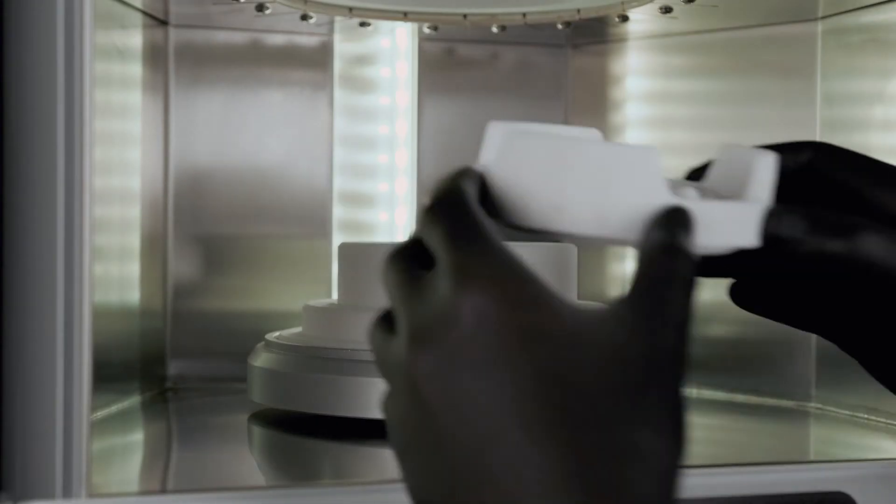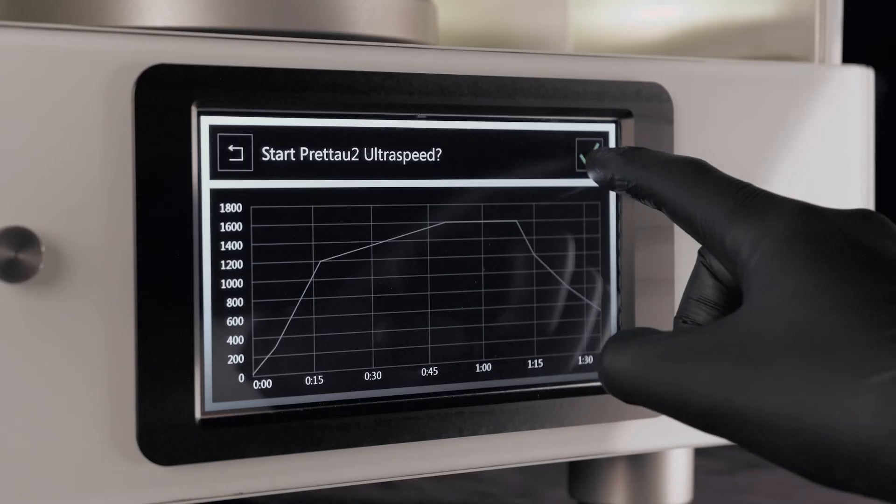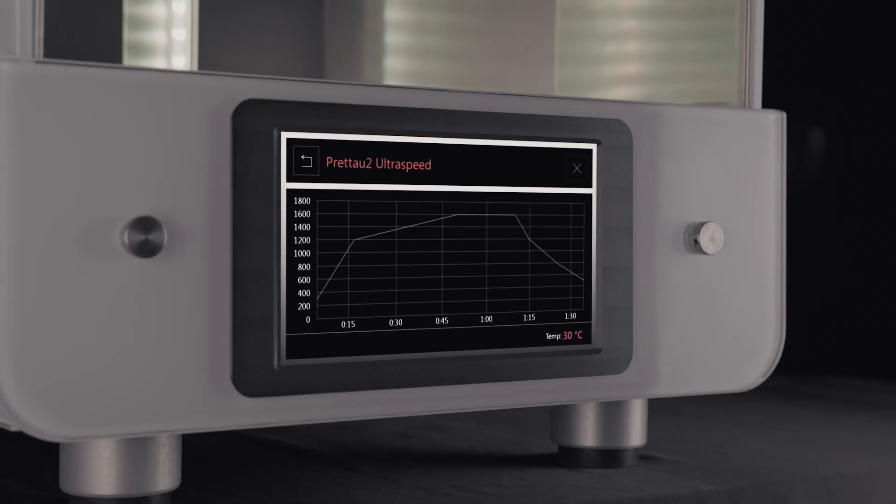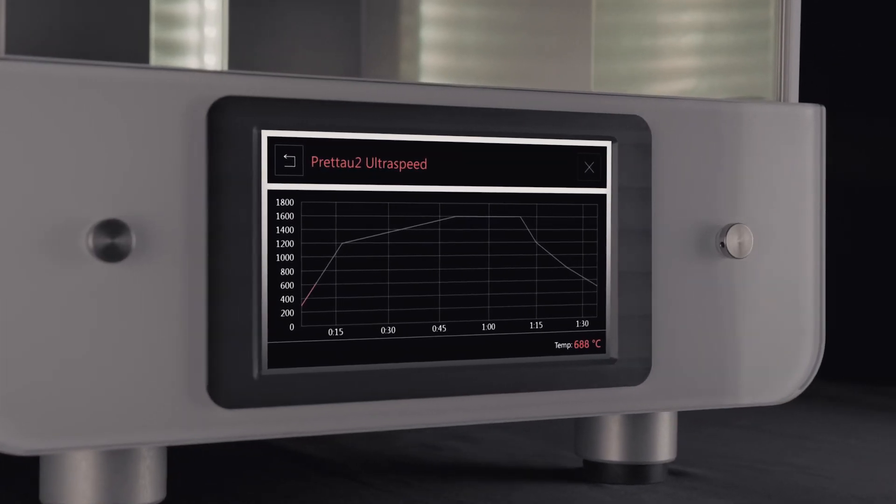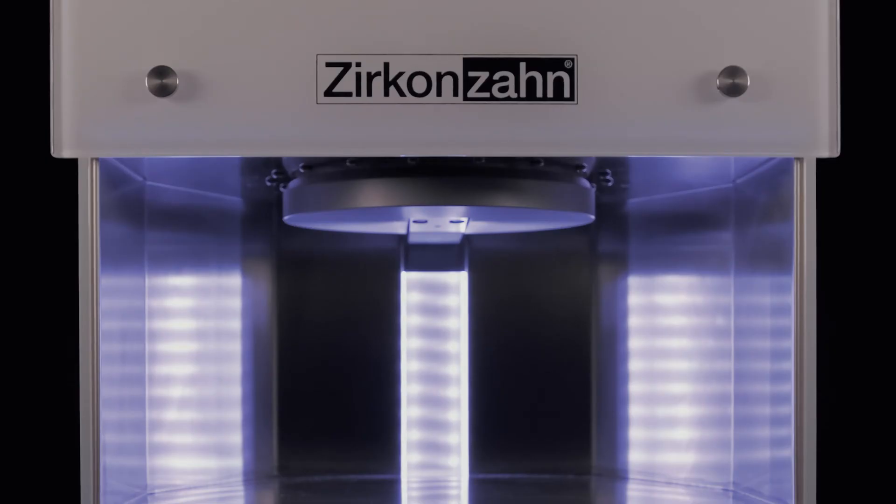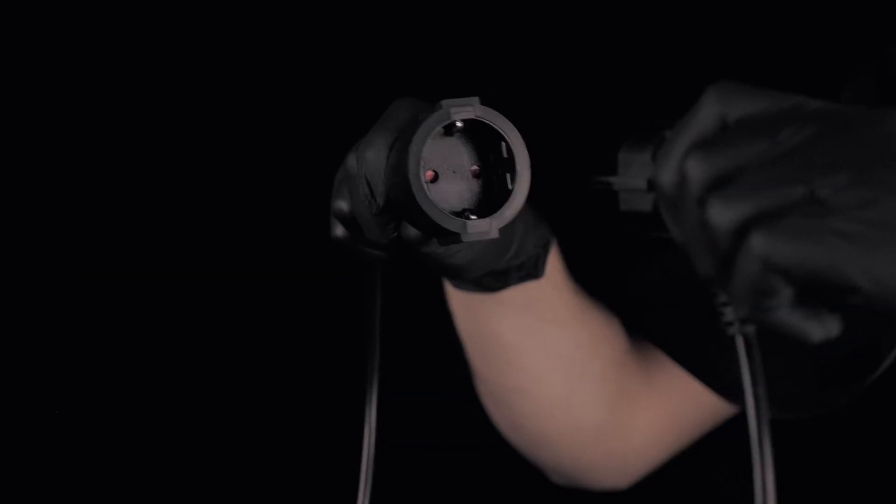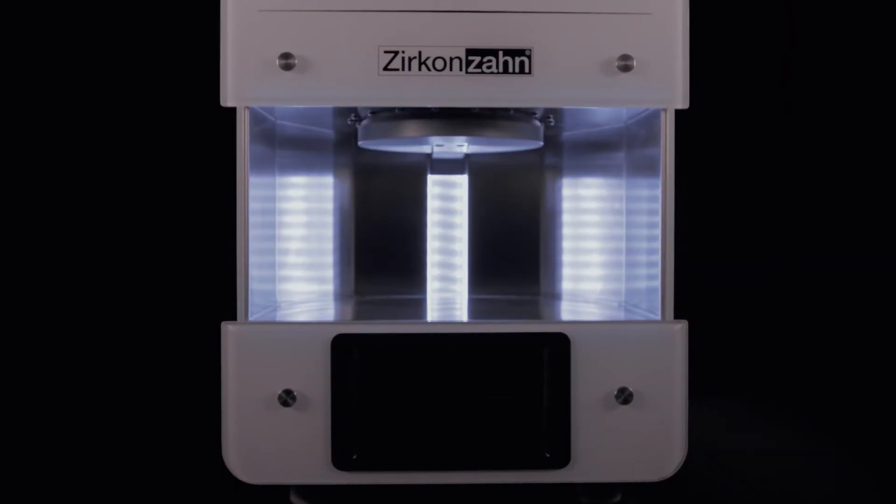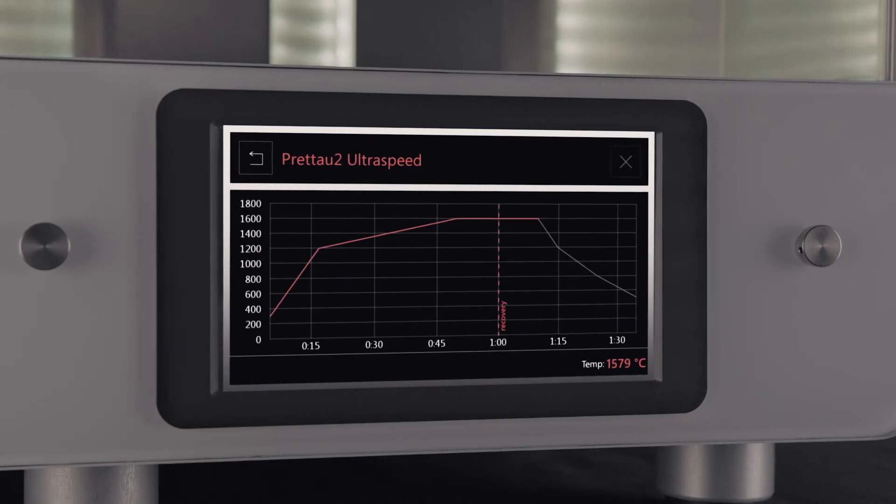But what happens if there is a power failure during a sintering cycle? With our new baking recovery function, it is almost impossible to achieve incorrect sintering results. After a power failure, the software checks whether the sintering program can be regularly completed without compromising the result or whether the sintering process must be suspended. If the program cannot be completed, the software will inform the user.